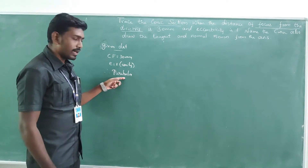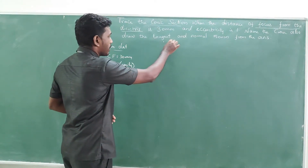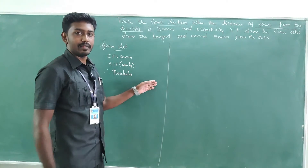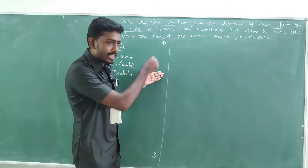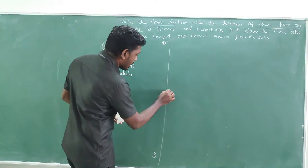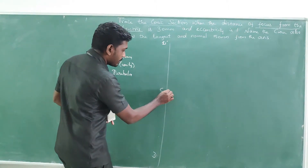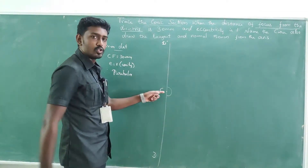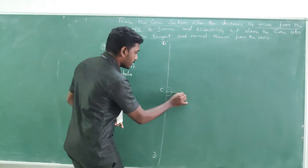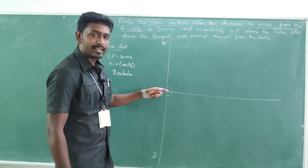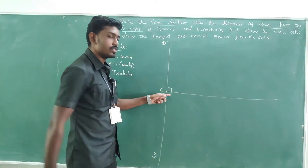Now we are going to start constructing the parabola. First, go for a vertical line — this is D'-D, nothing but the directrix line. Mark a point C at the mid of D' to D, then go for a perpendicular line to the directrix: keep your protractor and read 90 degrees to get the axis line.